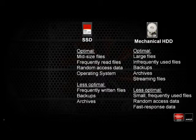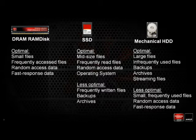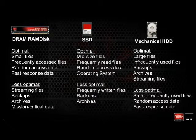Then we have the DRAM RAM disk. It's optimal for very small files, frequently accessed files, random access data, and very fast response data. So if you want the fastest storage possible, you want to have a RAM disk. Now that doesn't mean it's good for everything — if you have media files, streaming files, backups, or archives, those are perfect for mechanical drives because they're very low cost.